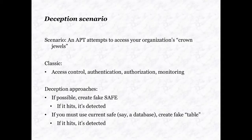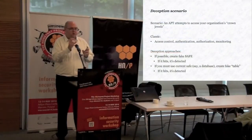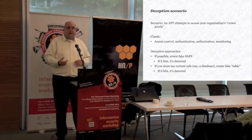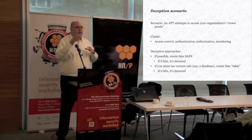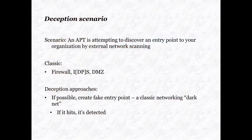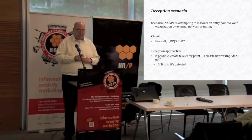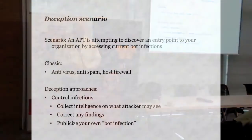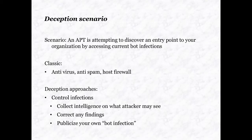For me, why not create a fake safe or fake database? Or why not double what we are already doing - create another safe, not just a fake one? Or create another table which shouldn't be accessed normally? An APT is attempting to discover an entry point by external network scanning. Firewalls, IDS, DMZ - all these regular tools are at your command. But why not create a fake entry point, a classic networking darknet? If it hits, it's detected. An APT accessing through a current bot infection - if I clear the bots I know are infected and somebody comes in through that bot infection, I'll have them at the entry point. I might get their malware, I can collect intelligence on what they do, maybe RDP replay.